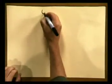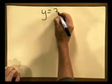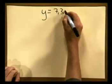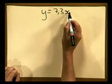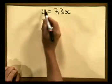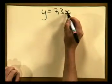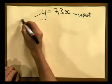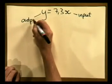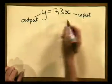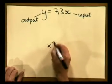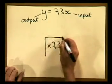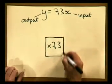In this equation, which is the dependent variable — which variable changes because of a change in the other variable? Now we can use something called a flow diagram to illustrate this. Remember our equation is y is equal to 7,3 multiplied by x, so we multiply x by 7,3 to get an answer for y. In this case x is called the input value because that's what we put into the equation, and y is the output value because that's what we get out. The operator is 7,3, because that is what we are doing to the input value.